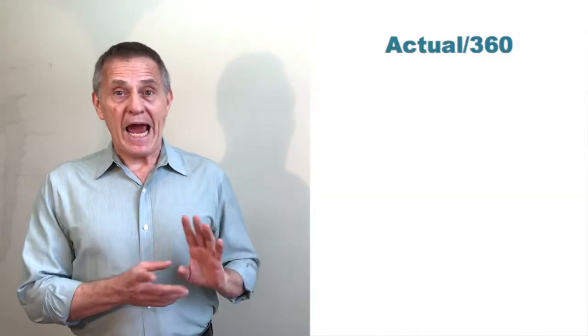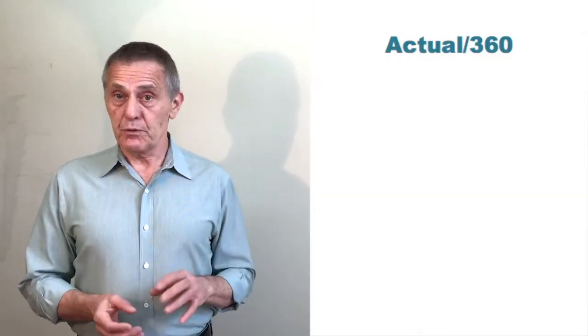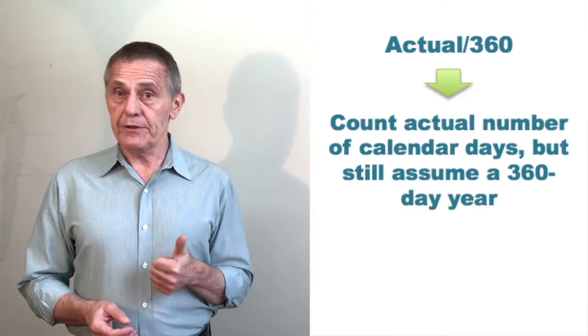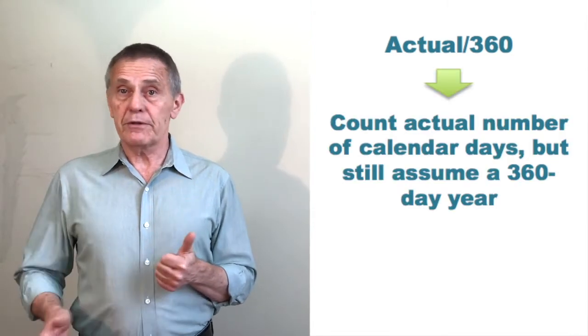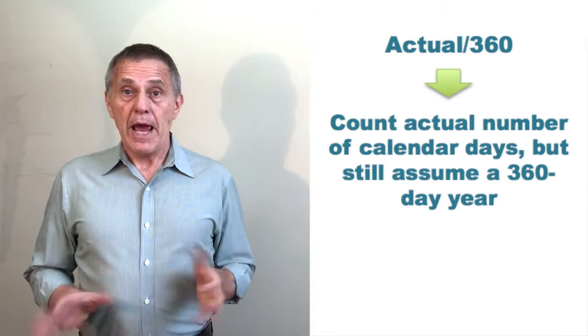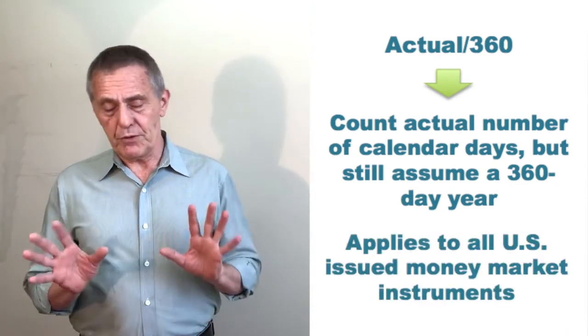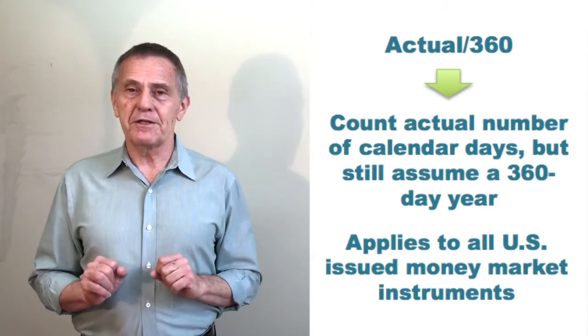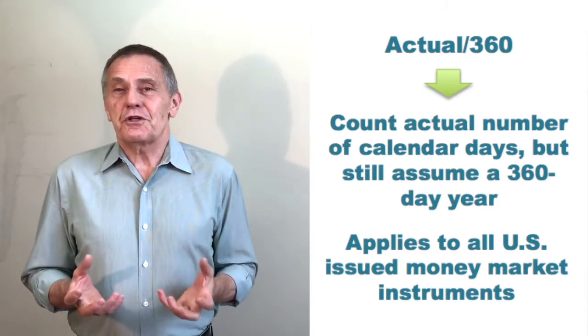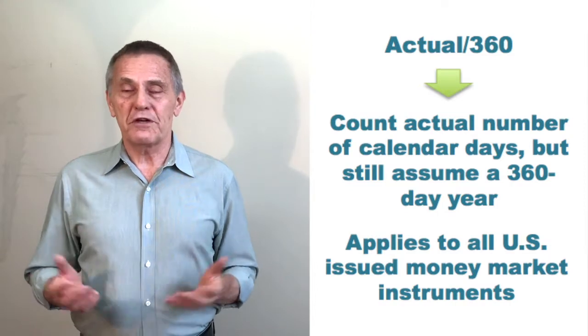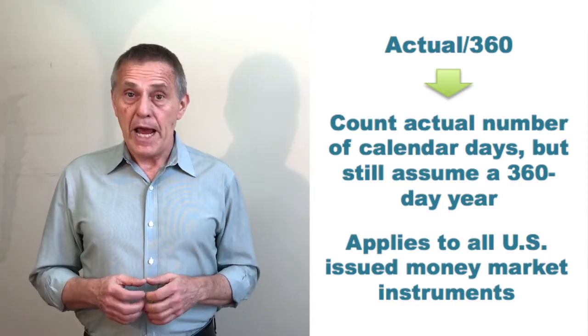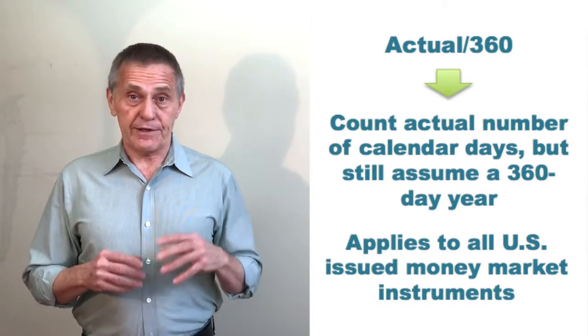Second one, actual over 360. In other words, we'll count the actual number of calendar days, but we'll still assume a 360-day year. Actual over 360 is the norm for money market instruments. Though there's some more complicatedness in the real world, generally securities with a year or less to maturity from the date of issuance.